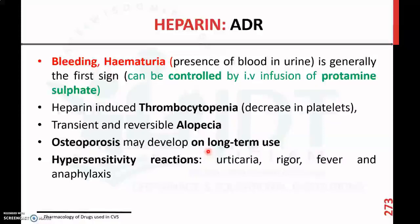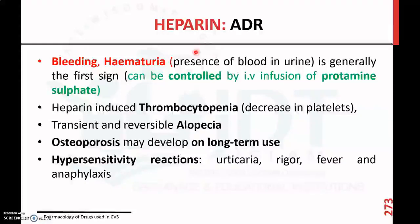The important adverse reaction of any anticoagulant is bleeding. With heparin, hematuria — presence of blood in urine — is generally the first sign of adverse drug reaction. To control overdosage of heparin, we have an antidote known as protamine sulfate given as an IV infusion to prevent and control heparin-induced anticoagulant action.